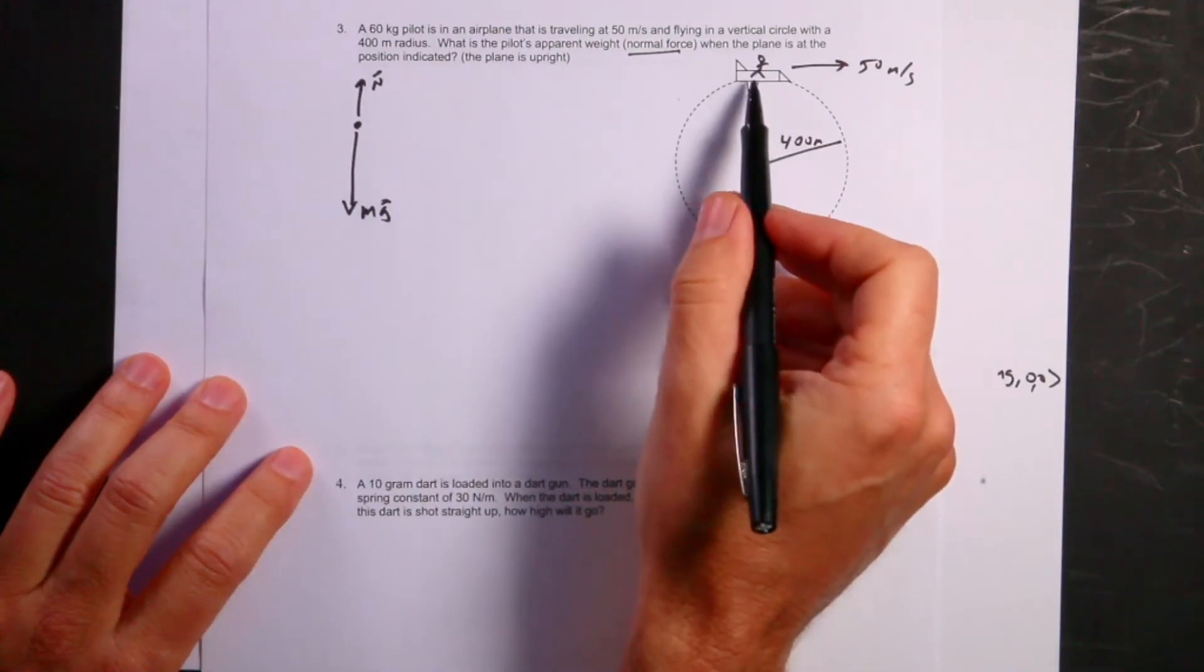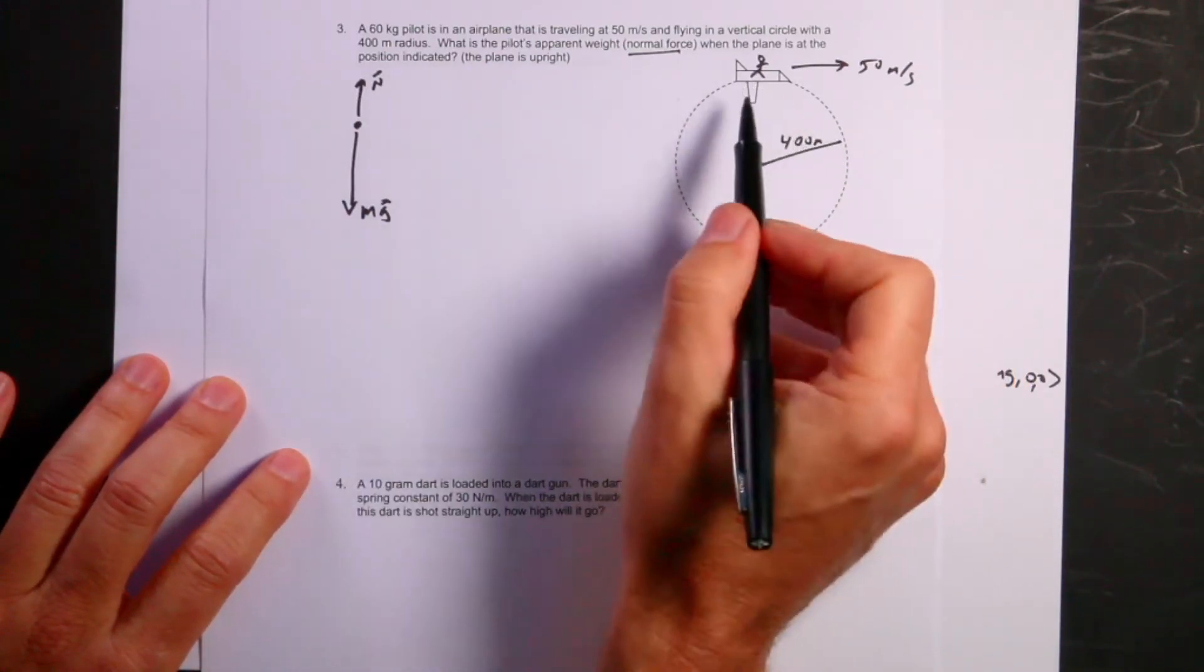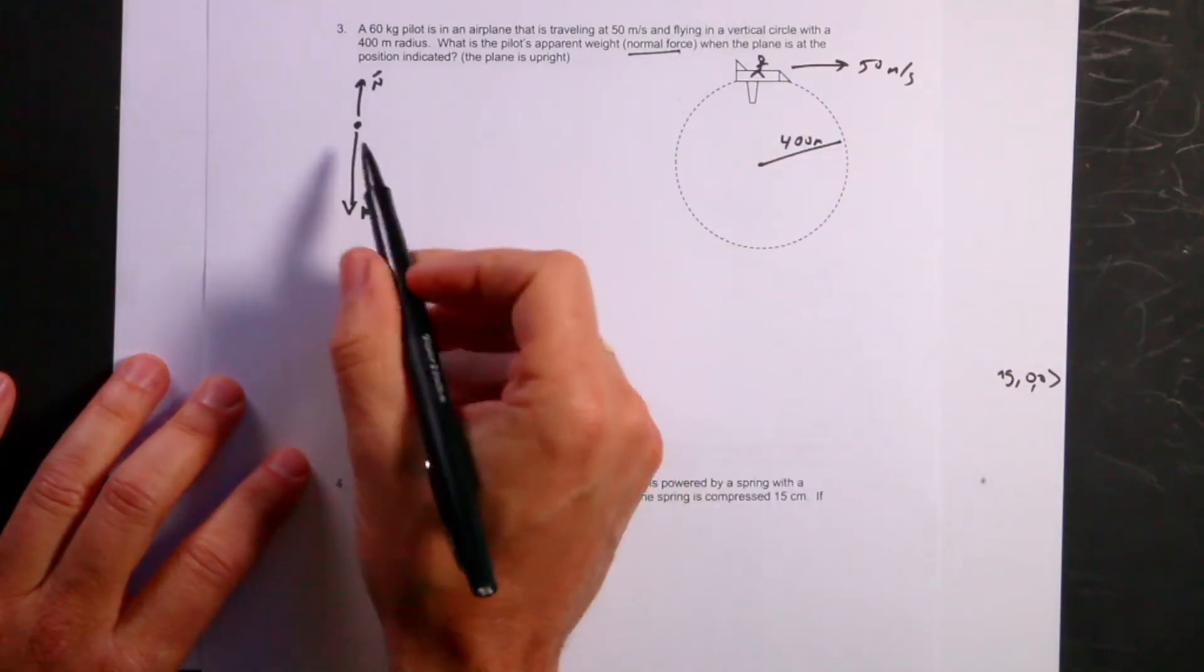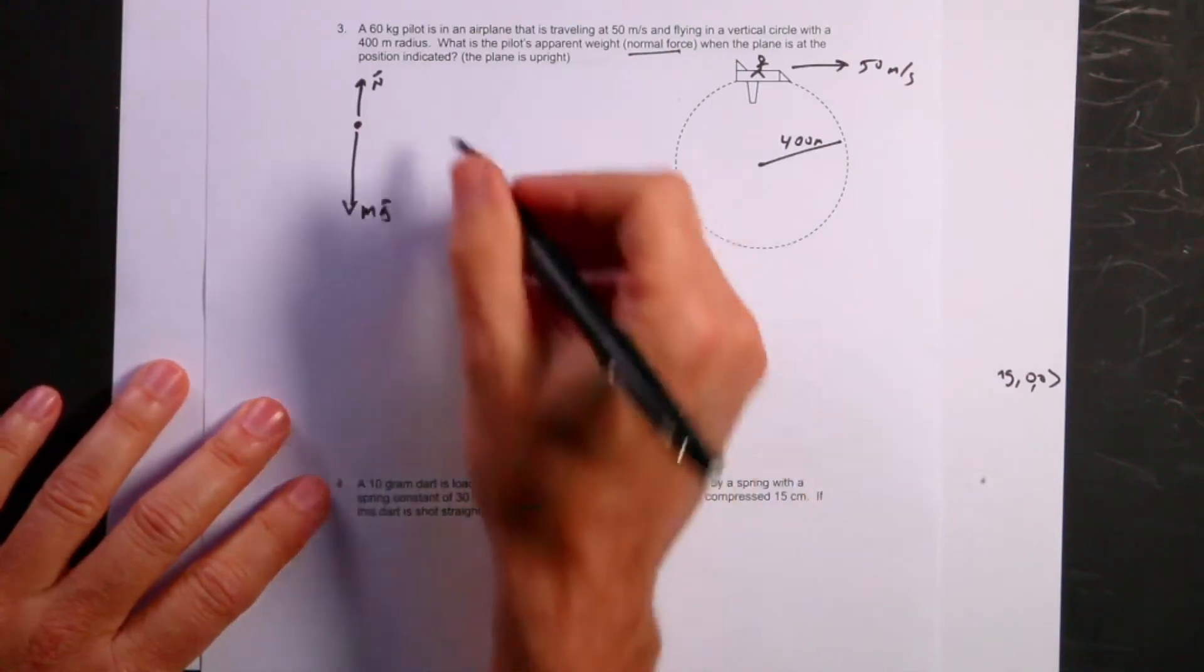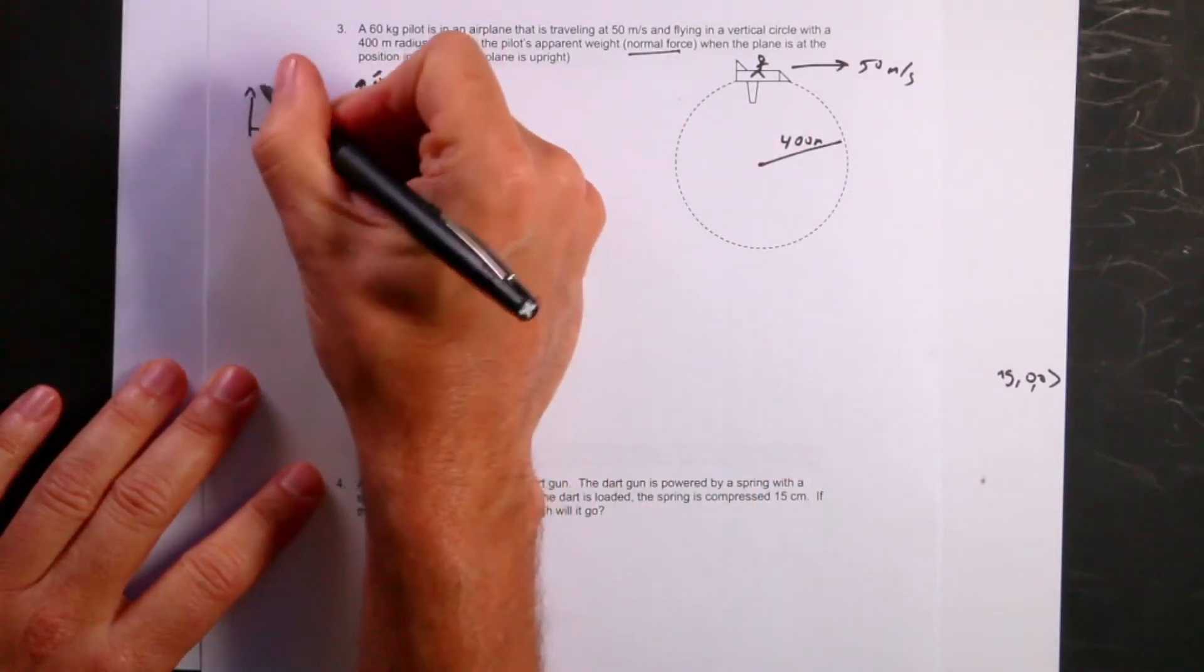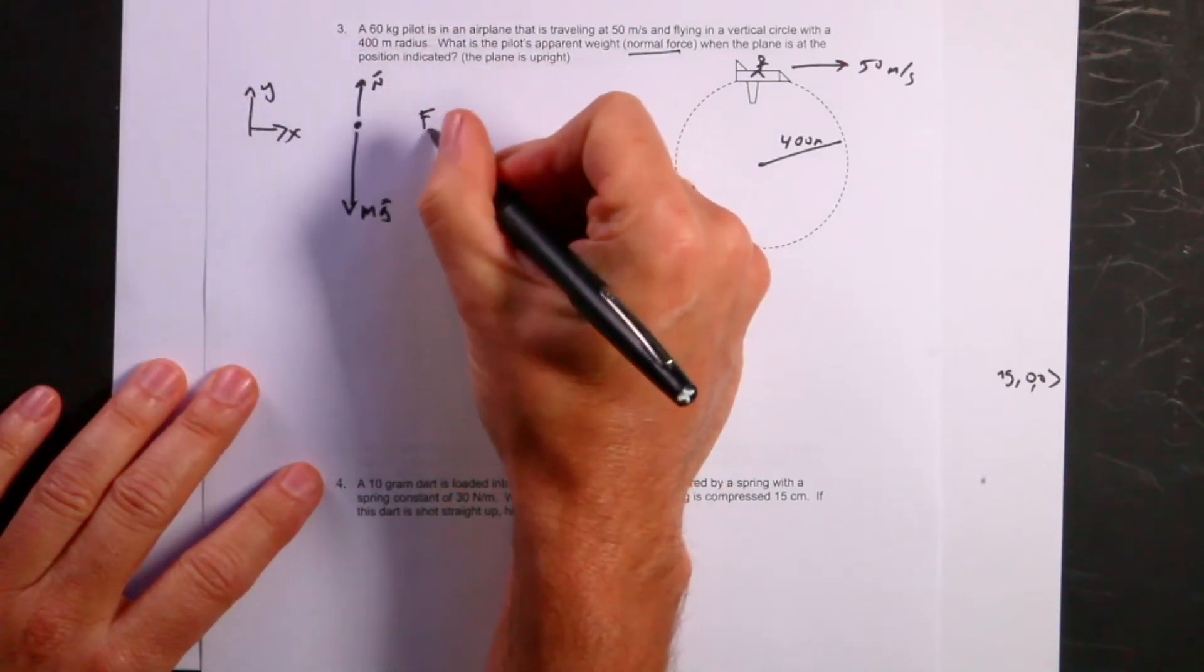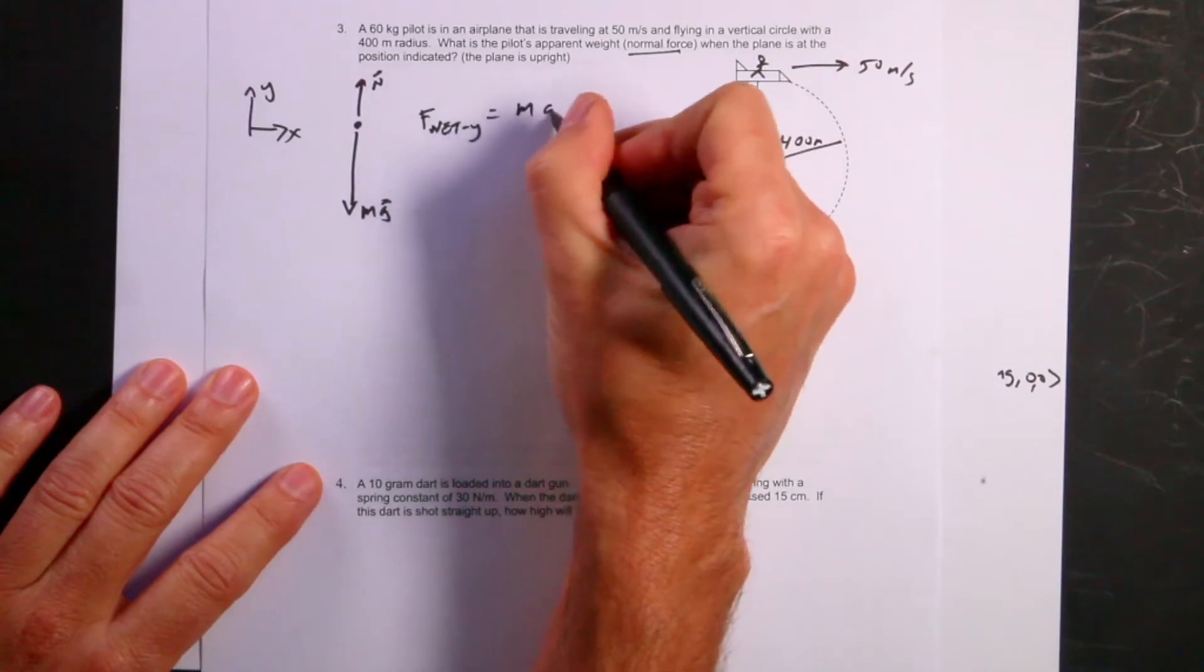Because that means that it implies, at least, I could have done the problem wrong, that the force is pushing up like this. Right? If you're upside down, then the force would be pushing down. So we can use our normal, let's call this the xy axis. And I can say F net y equals m a y.